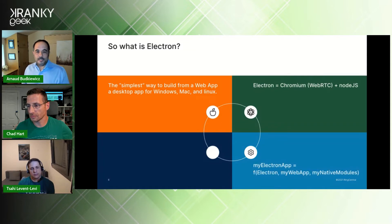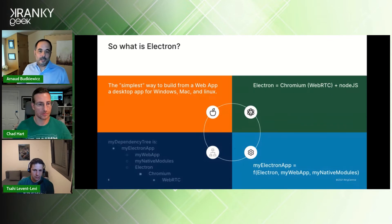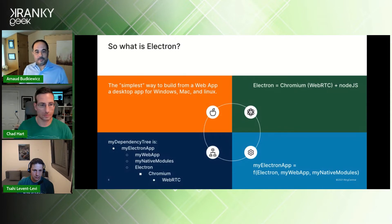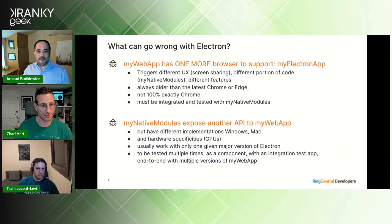Your application is a function of the Electron version you pick, your web app, and eventually your native modules. Your dependency tree has Electron as a container for your web app, coming with your native and Electron modules and a specific version of Chromium within WebRTC. So what can go wrong with Electron?